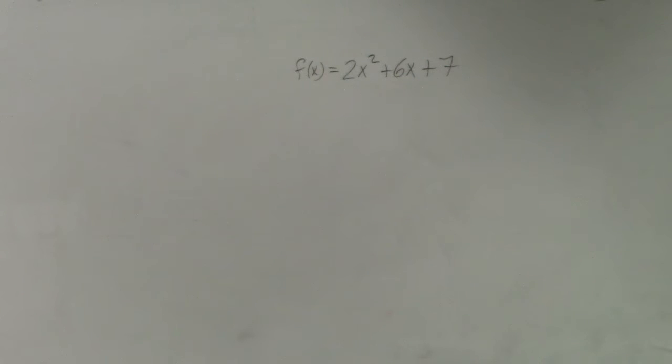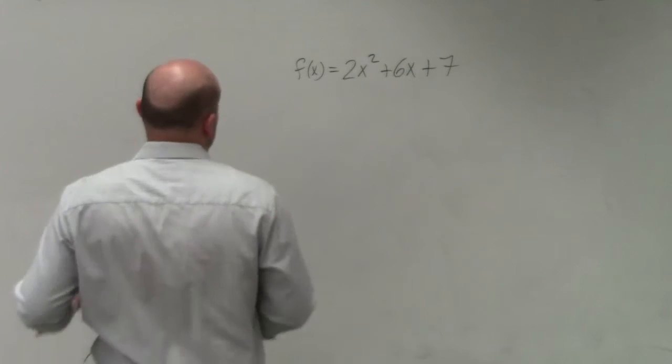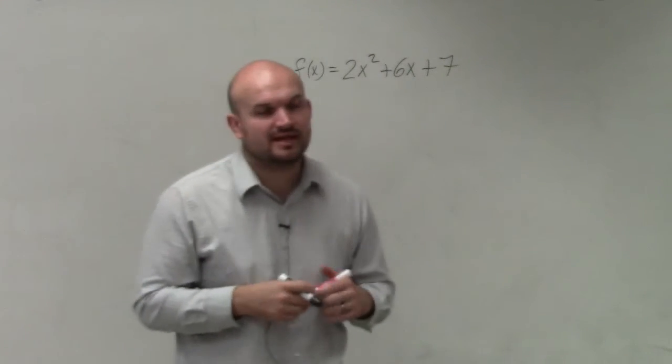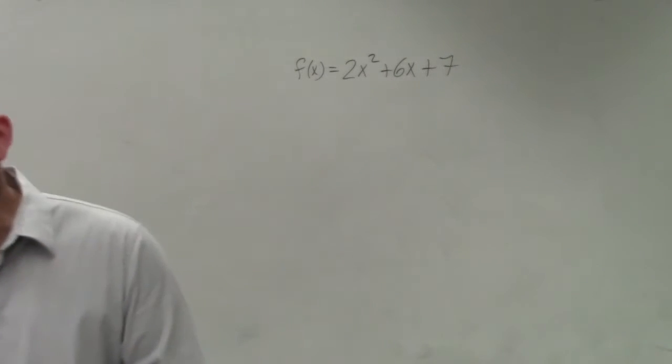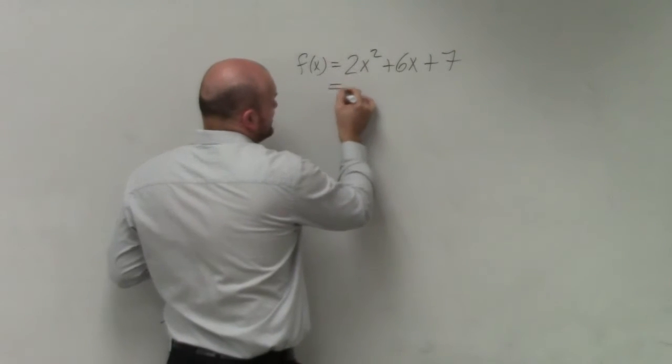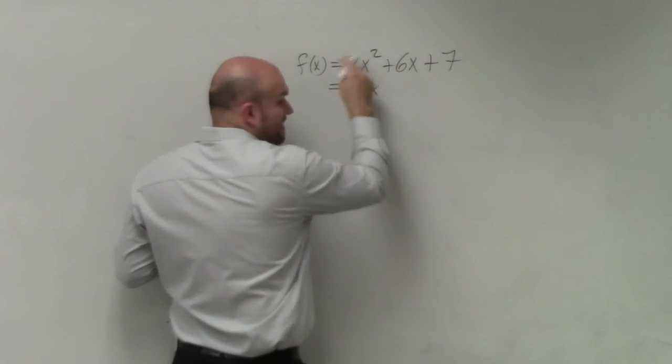All right, so in this example, ladies and gentlemen, the first thing we want to do when completing the square—one thing I told you guys to remember when completing the square—we only are going to be completing the square when a is equal to 1. You can see this is in standard form at the current time, and a is equal to 2. So to get a to equal 1, the first thing that we're going to always want to do is factor out a 2, or factor out our a.